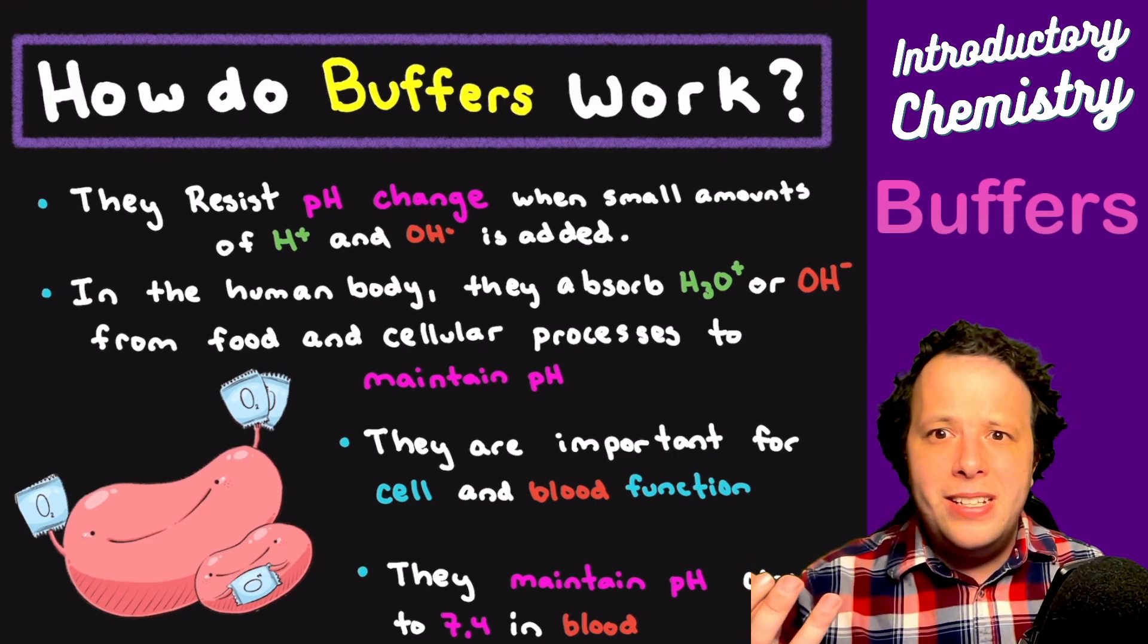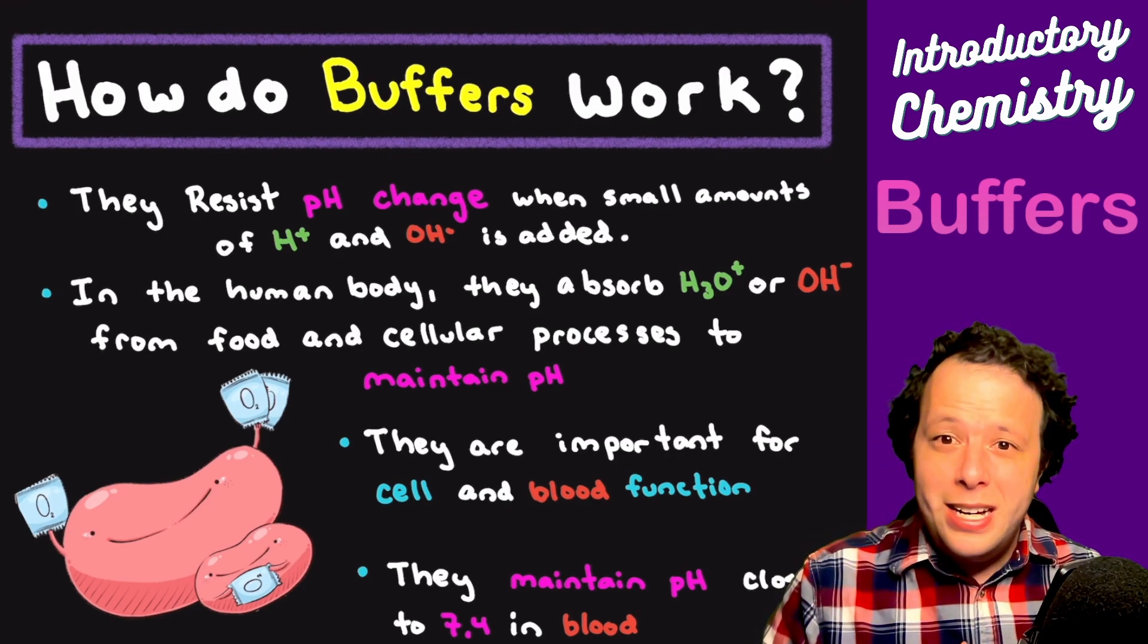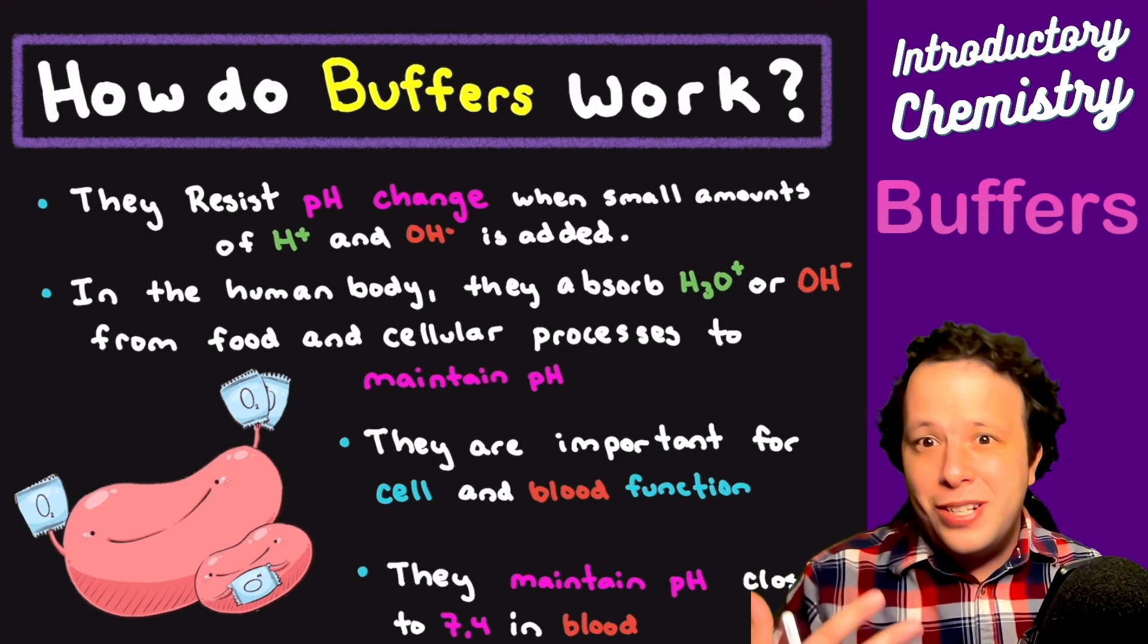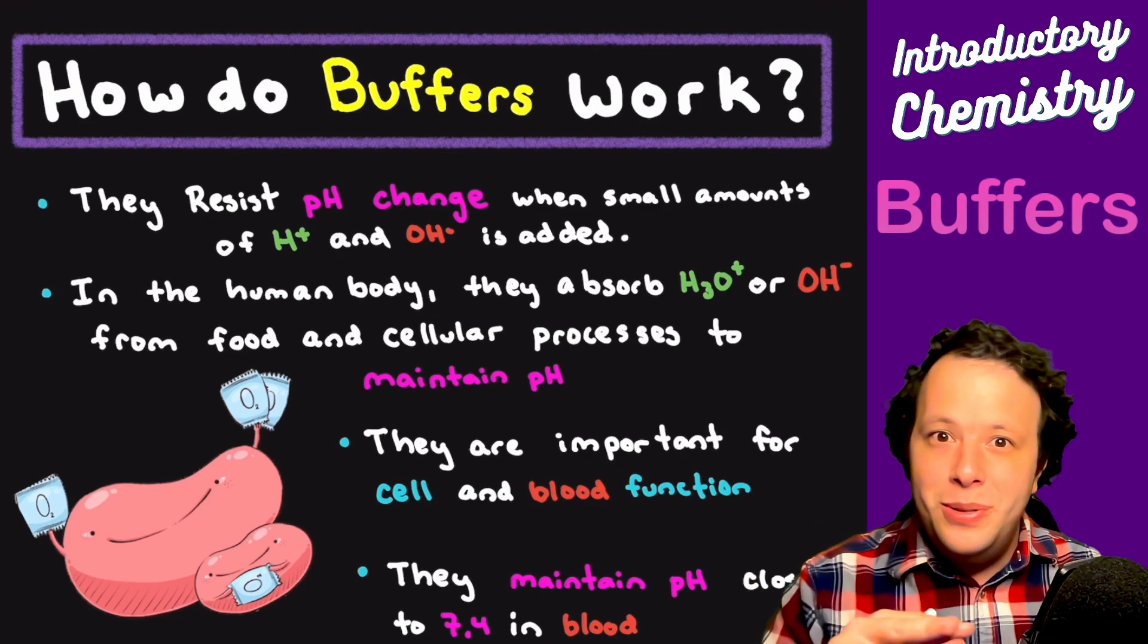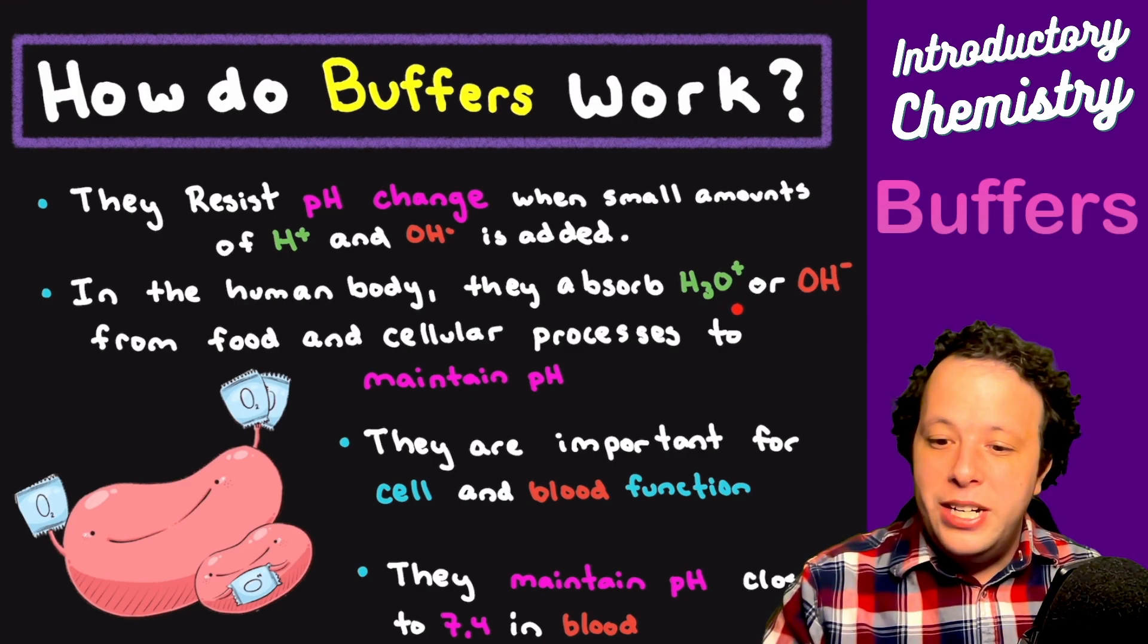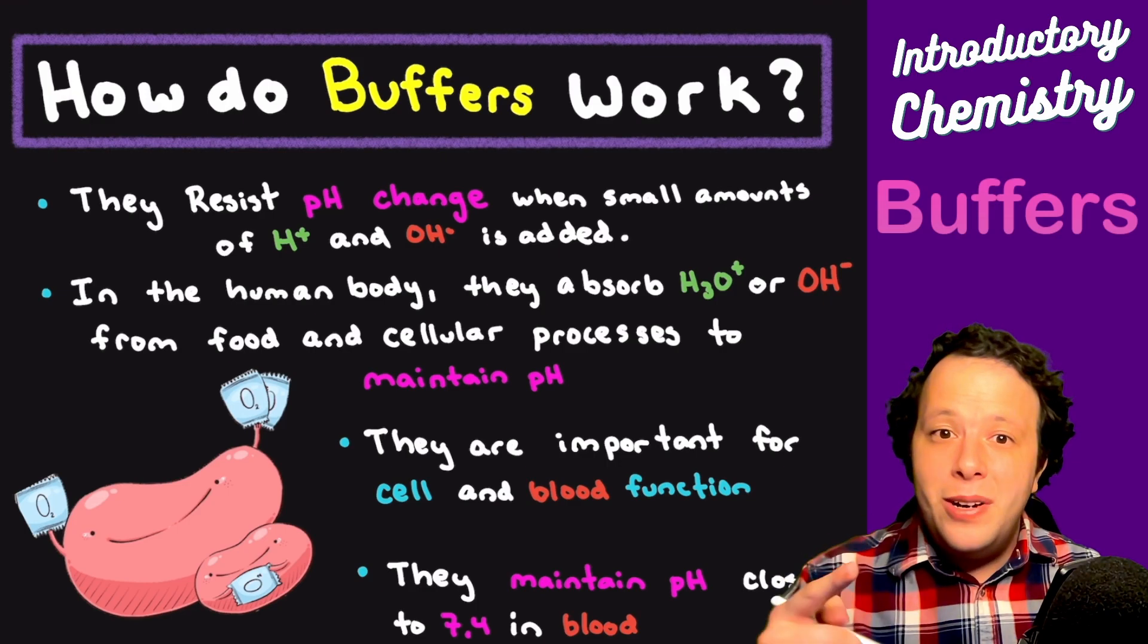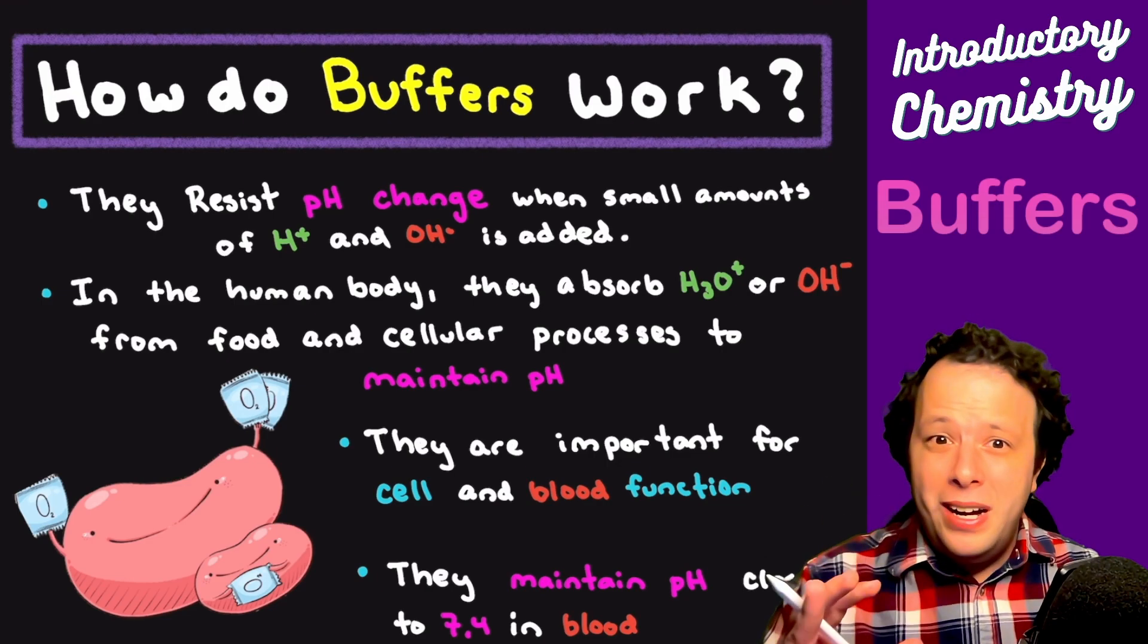One big example is if you eat a lot of acidic fatty food and you get a really upset stomach, that's because you had a little bit too much acid in your system. But over time you're going to feel better and your body will get back to its state of equilibrium. The body essentially absorbs protons or H3O+ and hydroxides to maintain. This is very important for how your cells and blood function.